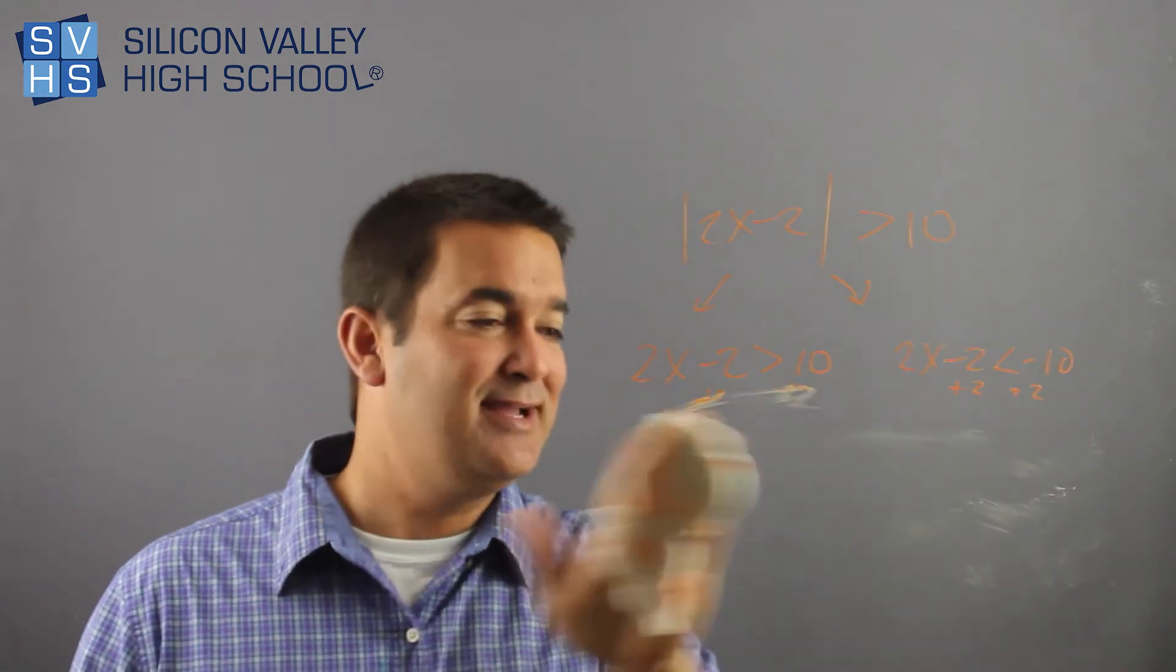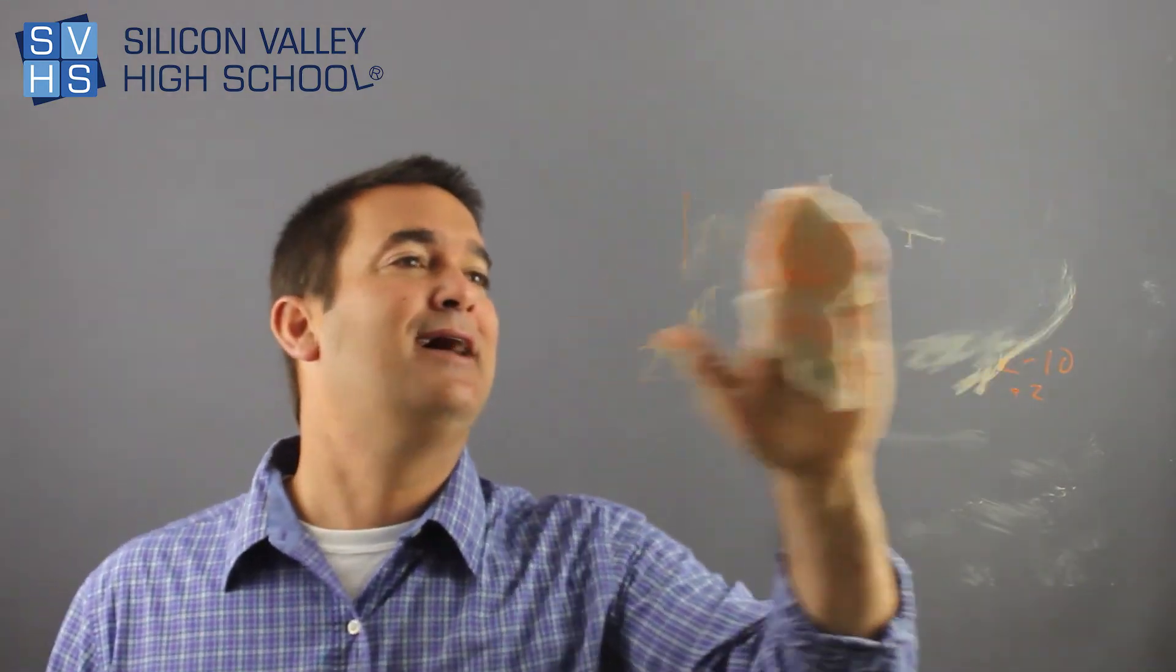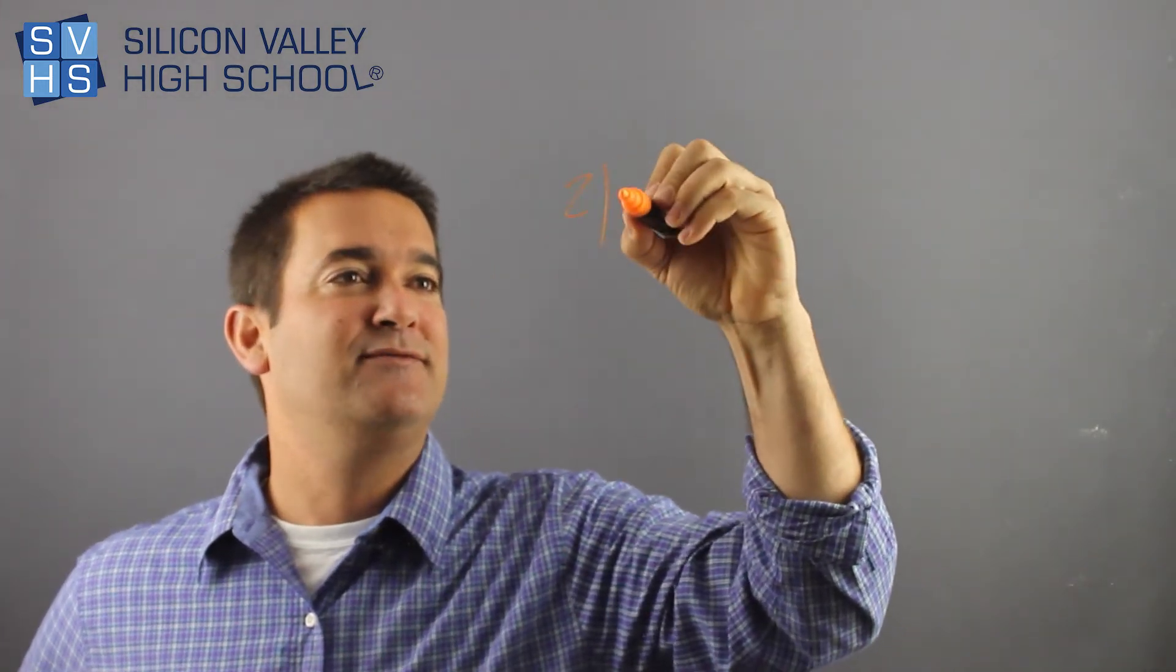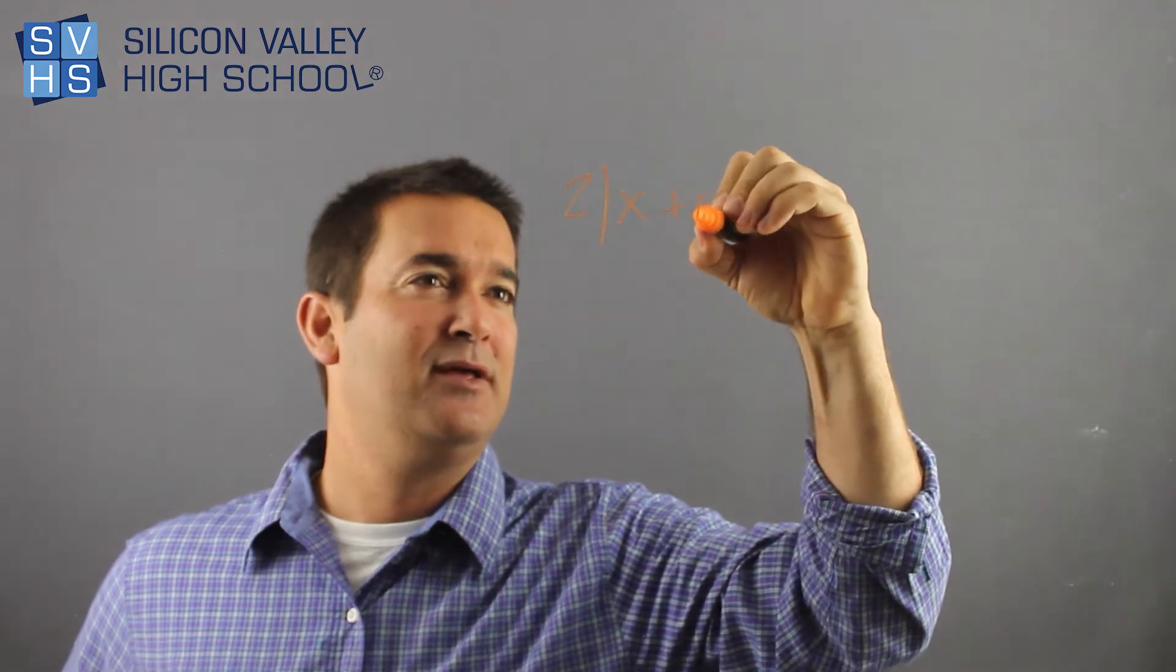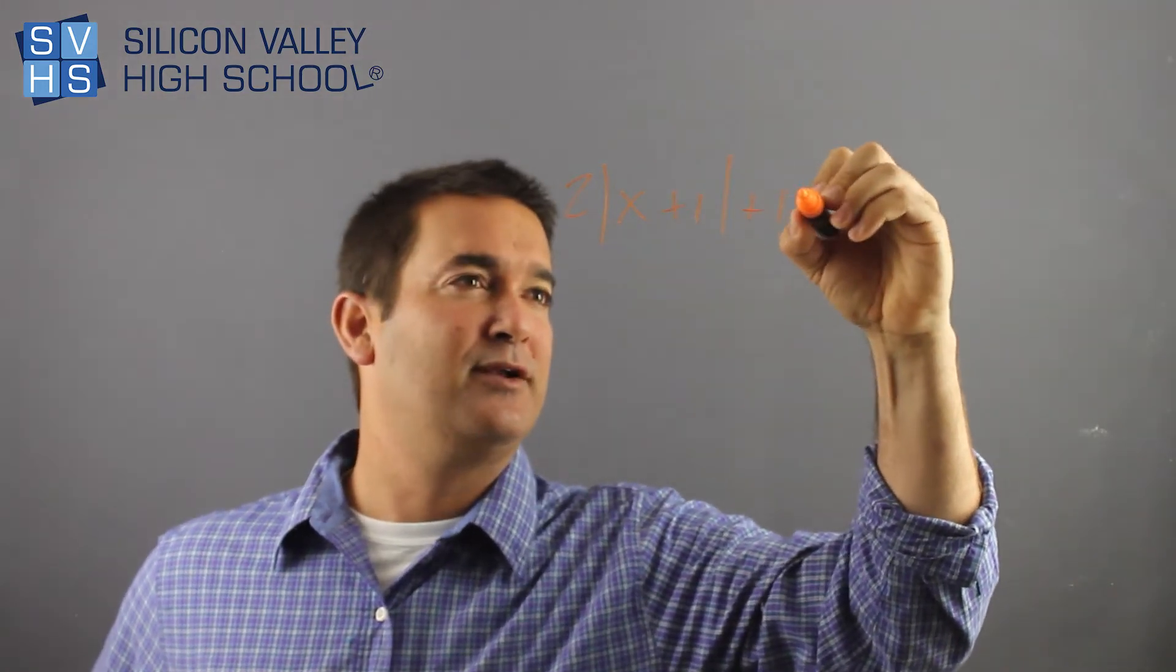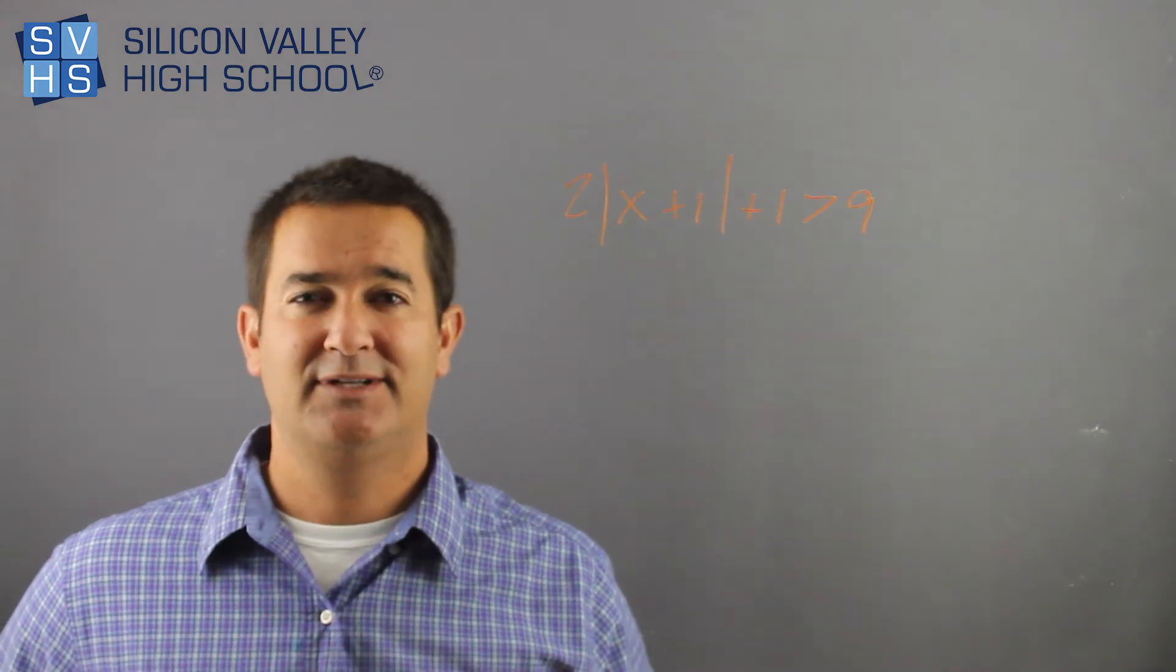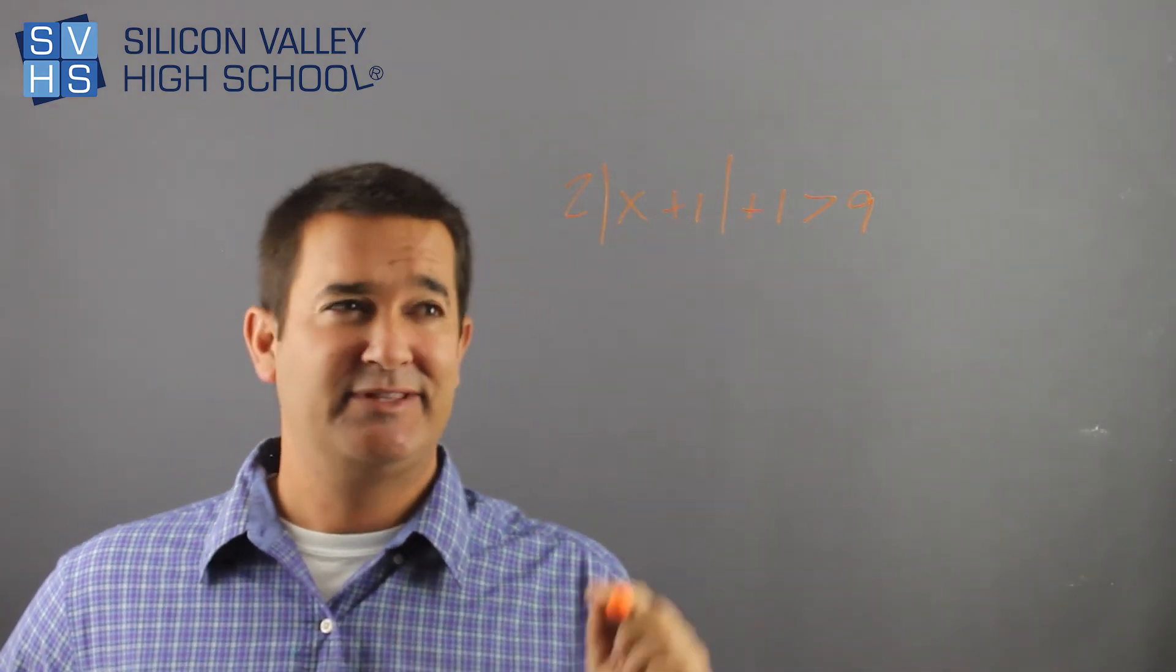I think you're getting cocky because you're like, 'I don't need any more examples, Ryan. This is so straightforward and I'm so smart that I have this mastered.' But there is one curveball that they can throw at you. And it looks like this: 2 times the absolute value of x plus 1, plus 1, greater than 9. So right now you're like, 'This is an automated response. Ryan said don't even think. Two arrows.'